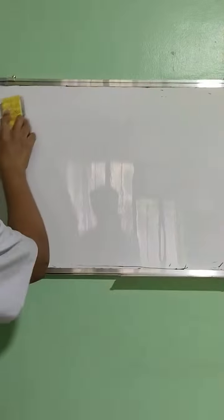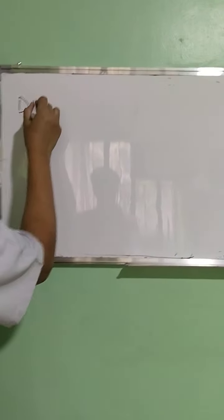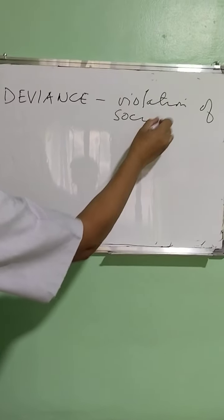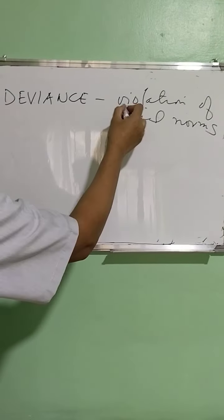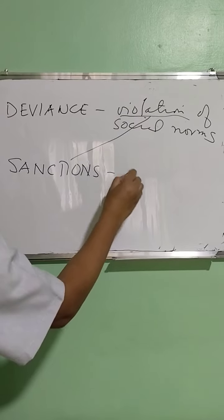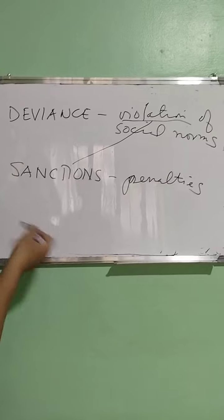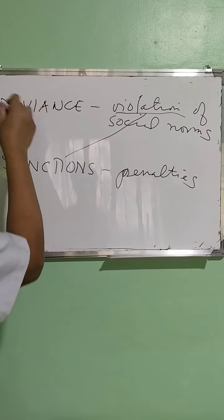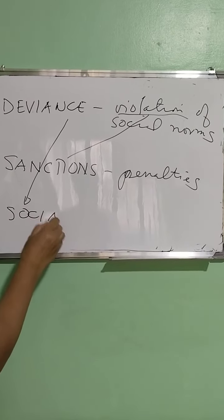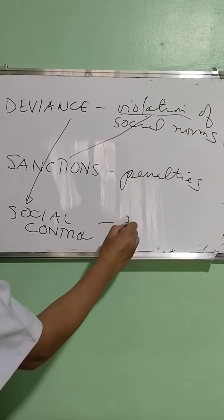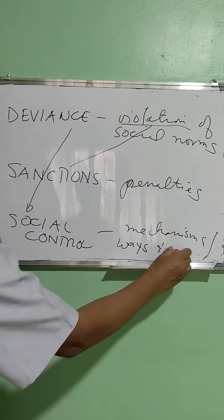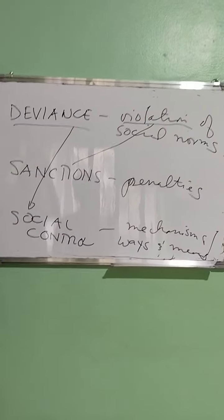By way of review, to summarize everything discussed today: when we talk of deviance, we are talking about a violation of social norms. When you violate something, this results in the imposition of what we call sanctions, and sanctions simply mean penalties. In order for society and the government to prevent this — to prevent deviance — they impose certain social control. Social control pertains to the mechanisms being implemented by society in order to prevent any form of deviance.